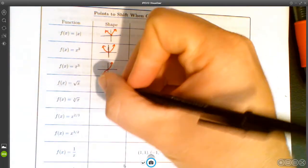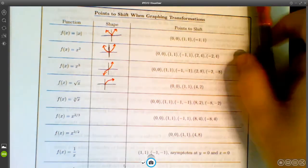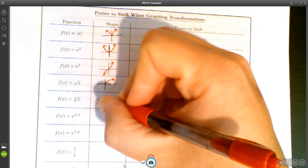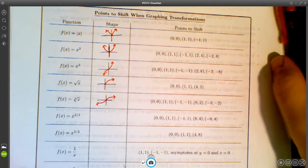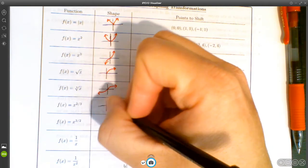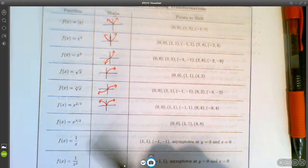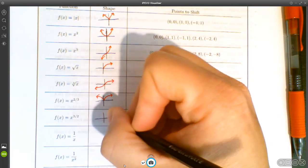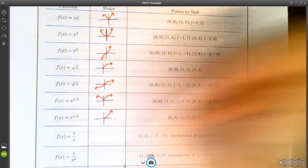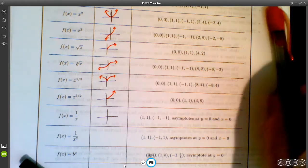For a square root function, that's going to look like this. For a cube root function, it's going to look like this. x to the 2/3, that's the one that has the little cusp. It looks like a bird. x to the 3/2, that's the one that looks kind of like this.